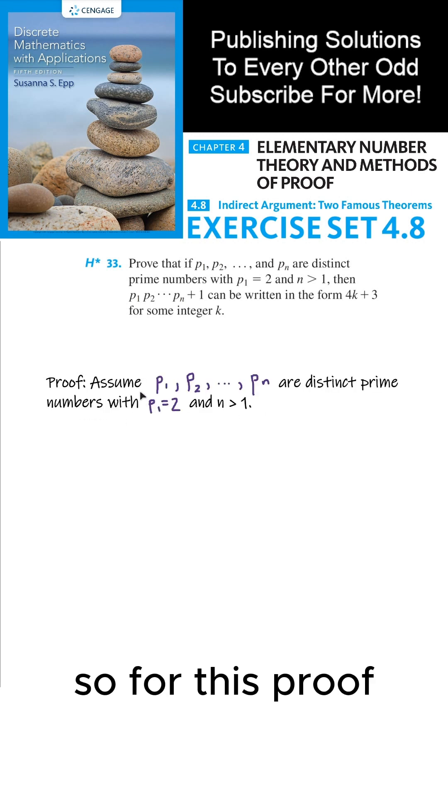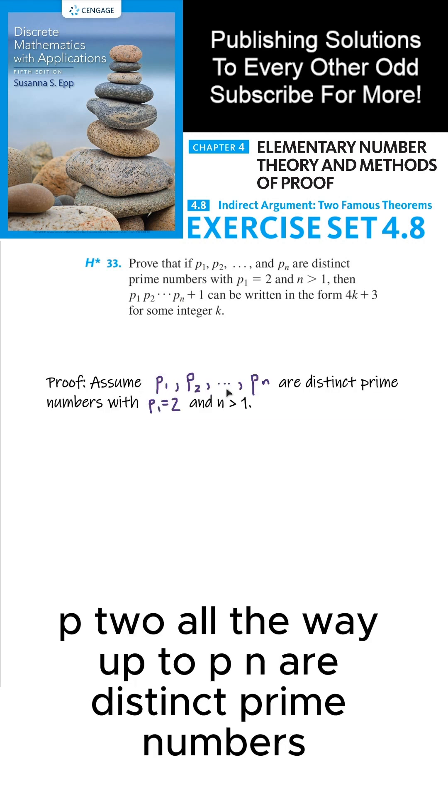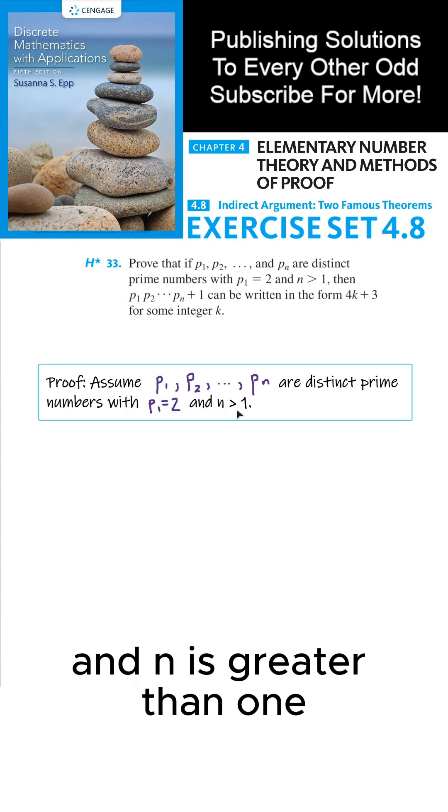Alright, let's prove this. For this proof, we're going to assume that p₁, p₂, all the way up to pₙ are distinct prime numbers, with p₁ equals 2 and n is greater than 1.